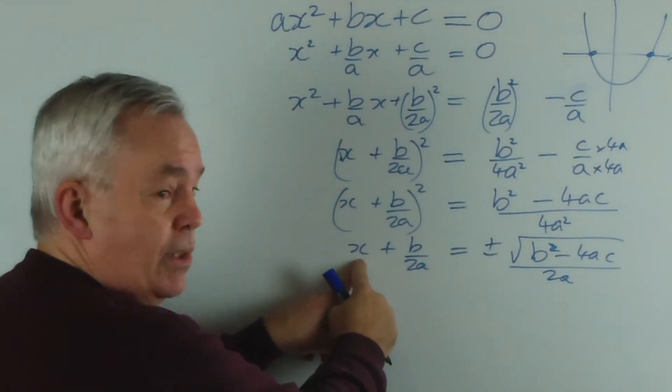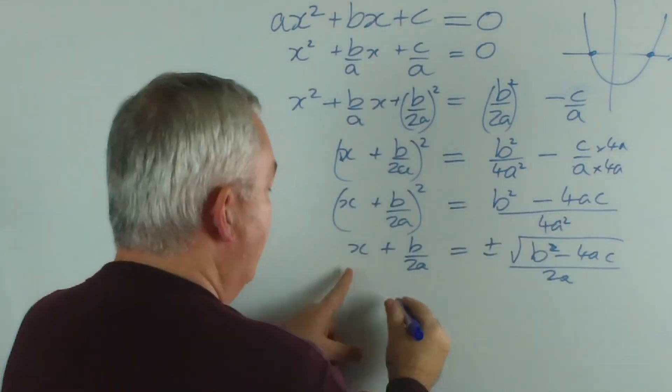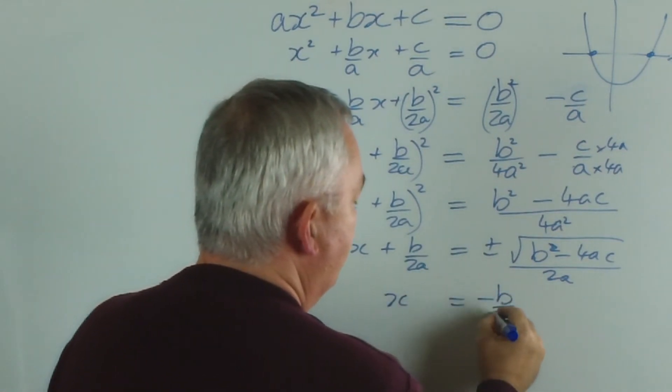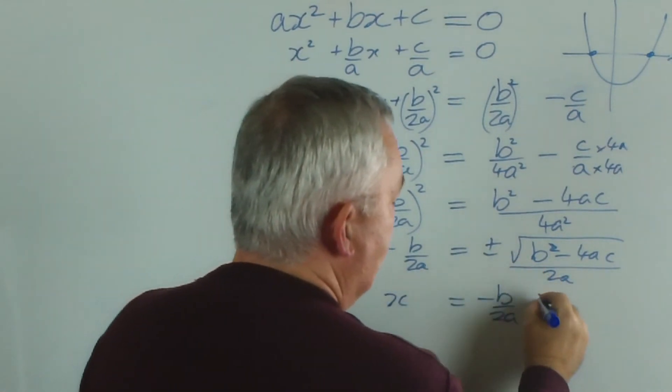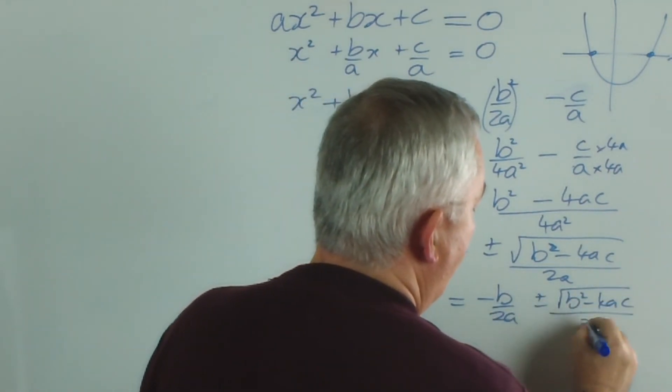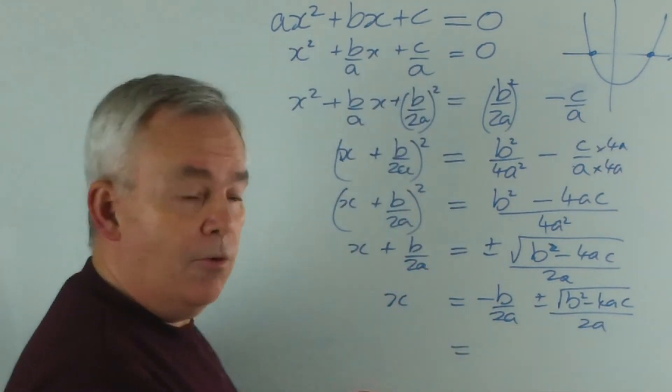We want x by itself. So we remove this term from this side by subtracting it, which means we subtract it from this side as well. I'm going to write it at the front, plus or minus.